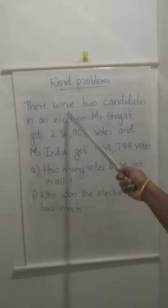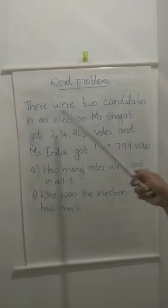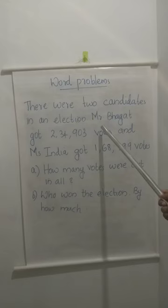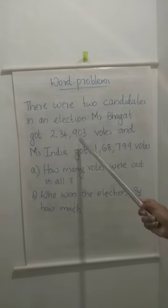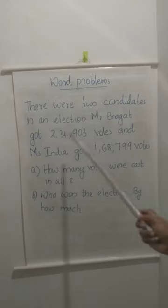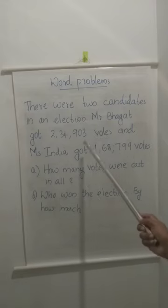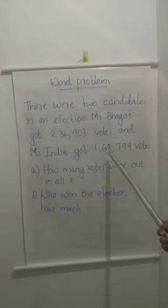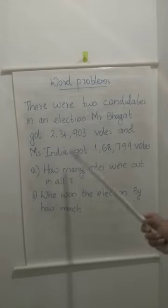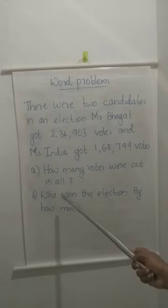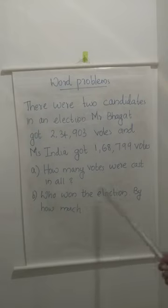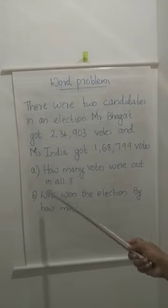There were two candidates in an election. Mr. Bhagat got 2,34,903 votes and Miss India got 1,68,799 votes. How many votes were cast in all? Who won the election and by how much? So we have to solve two questions here.